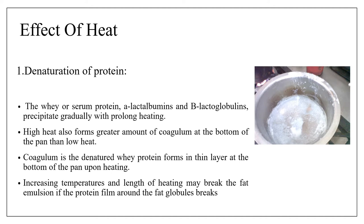Increasing temperature and length of heating may break the fat emulsion, if the protein film around the fat globules breaks. When we heat milk, you can see a layer on top — that is a fat layer along with a thin film of protein. So this is not only fat but also a thin layer of protein. The main effect of heat on protein is that it starts to form coagulum at the bottom of the pan.